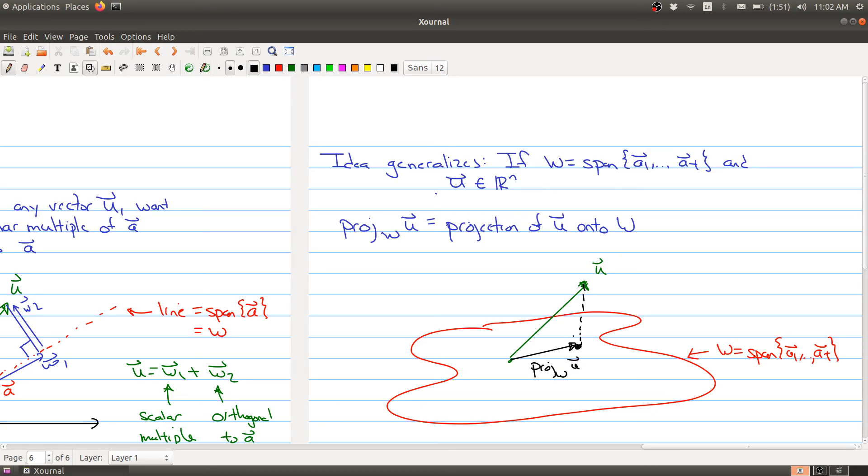And we want to do it so that this vector, the vector pointing up to u, is orthogonal to every vector in w.